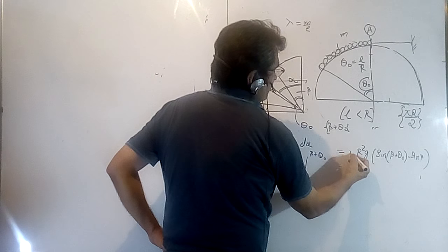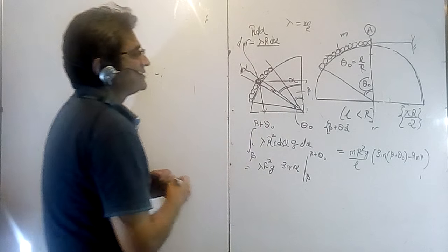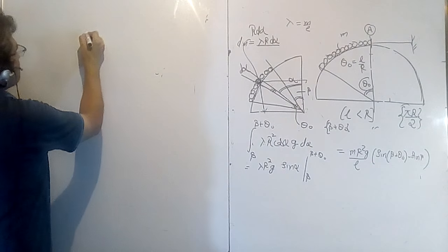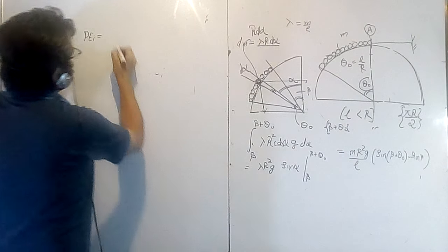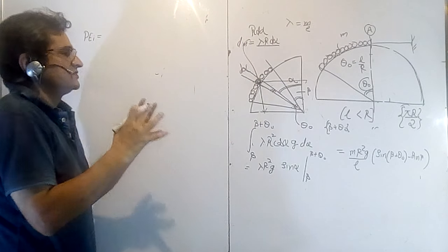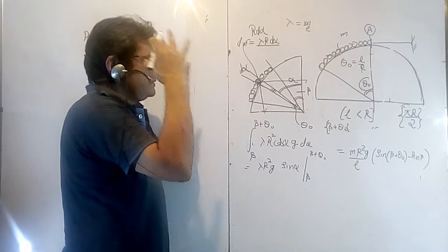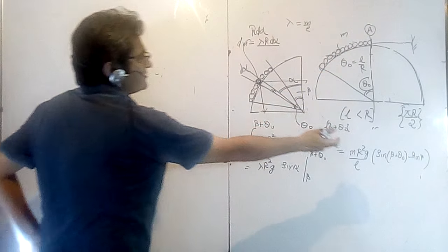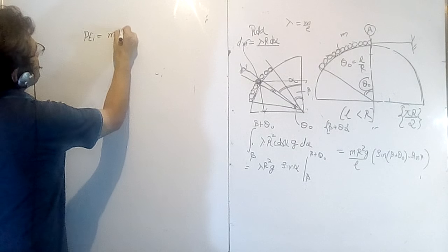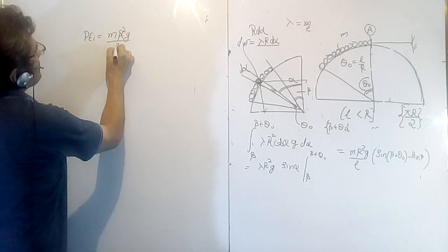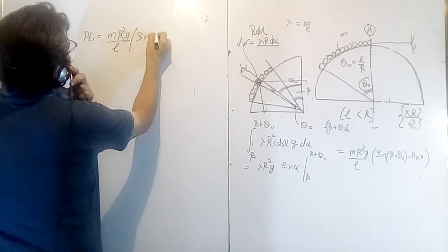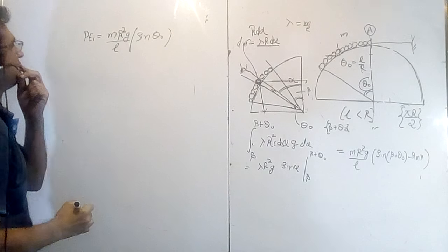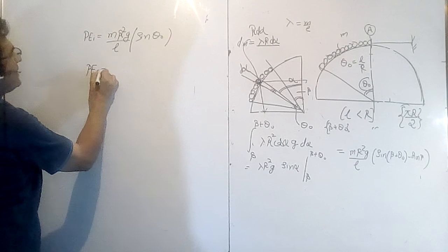Replacing lambda with M/L, the potential energy at angle beta is (MR²G/L) · [sin(beta + theta_0) − sin(beta)]. For the initial position, beta = 0, since the chain starts at the top. So the initial potential energy is (MR²G/L) · [sin(theta_0) − sin(0)], which simplifies to (MR²G/L) · sin(theta_0).